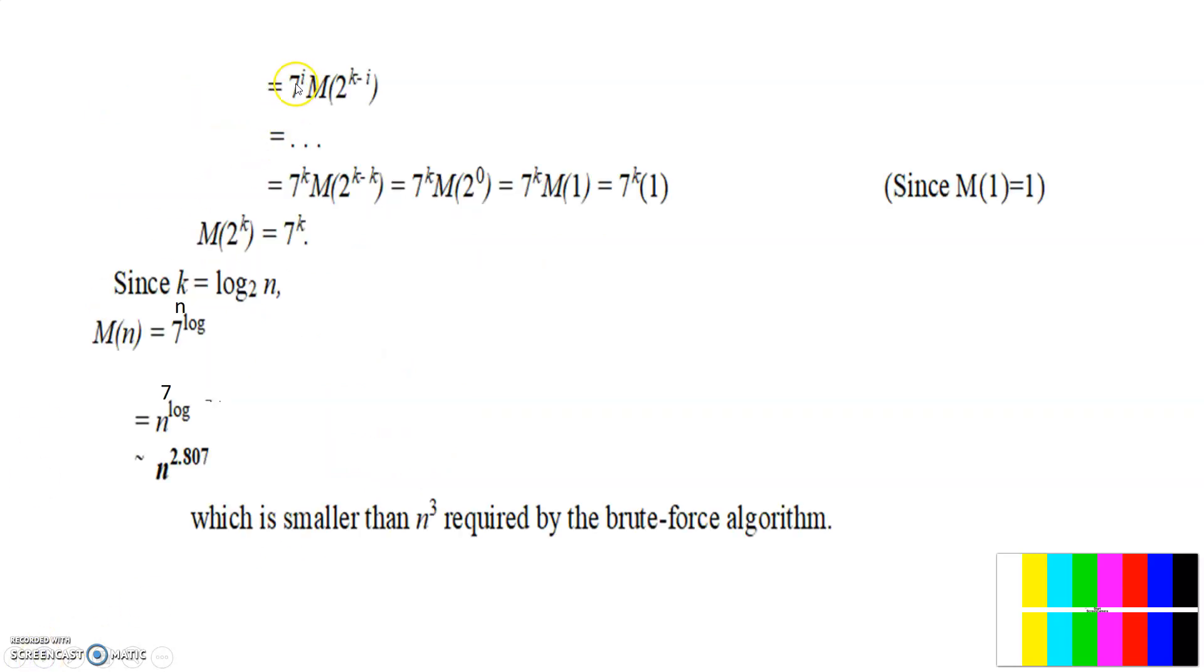That is 7 to the power of i, M into 2 to the power of k minus i. If it is i, here also power of 7 must be i. So like that we will substitute.